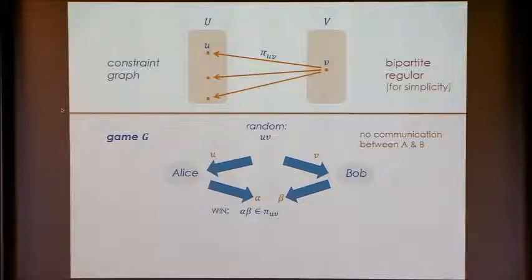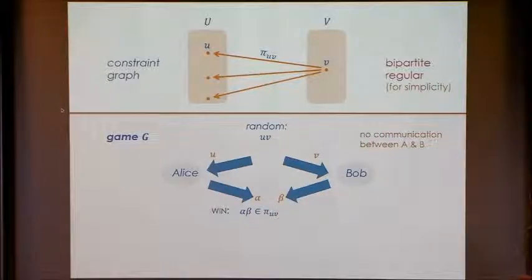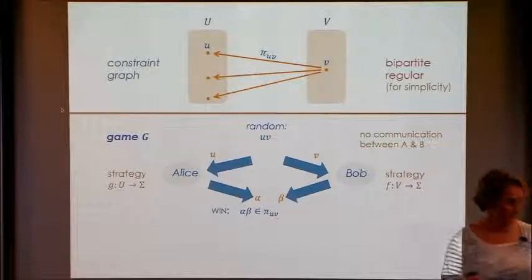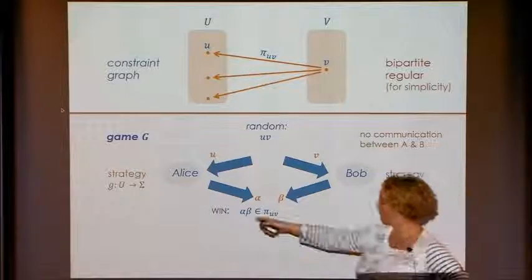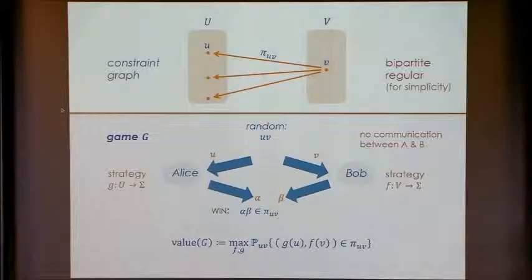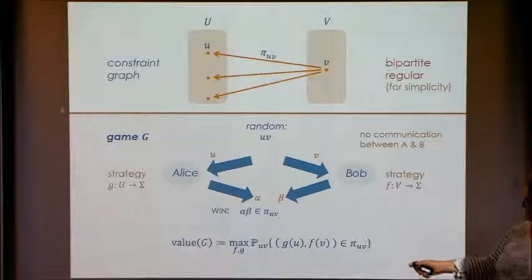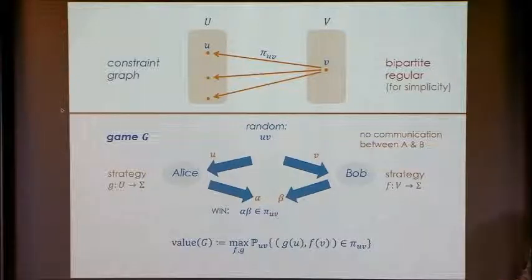Classically, Alice and Bob are required not to communicate with each other — they can communicate all they want before the game begins, but after Alice receives u and Bob receives v, they're not allowed to talk. This means Alice's strategy is just a function of her question u, and she might as well be deterministic — a function from questions u to the answer set sigma. Similarly for Bob. The value of the game is the maximum over all strategies of the fraction of question pairs for which their answers satisfy the constraint.